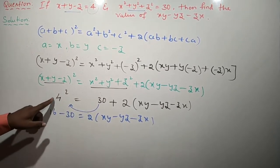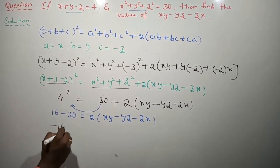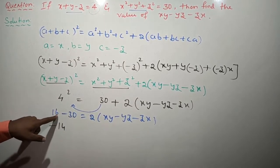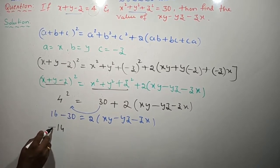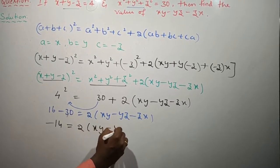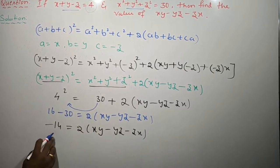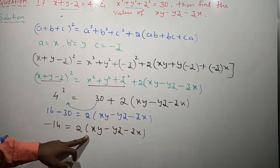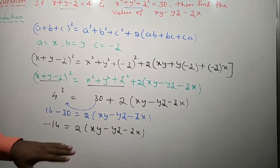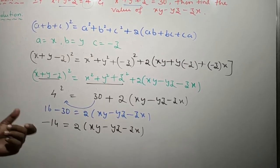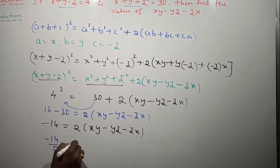Now, 4 squared is 16. Transfer 30 to the left side: 16 minus 30 equals 2 into xy minus yz minus zx. 16 minus 30 gives minus 14. So minus 14 equals 2 into xy minus yz minus zx. To remove the coefficient 2, we divide both sides: minus 14 divided by 2 equals xy minus yz minus zx.